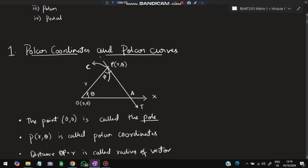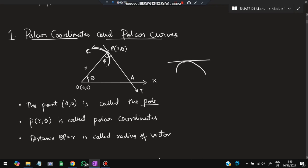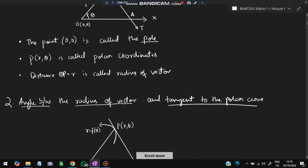The first topic is polar coordinates and polar curves. Imagine there is a point O, and there is a line called the radius, with an angle theta. Another line comes from it — that is A — and T is the tangent. A tangent to a curve means a line touching the curve at 90 degrees. The point (0,0) is called the pole; P(r, θ) is called the polar coordinate, and the distance OP = r is called the radius vector.